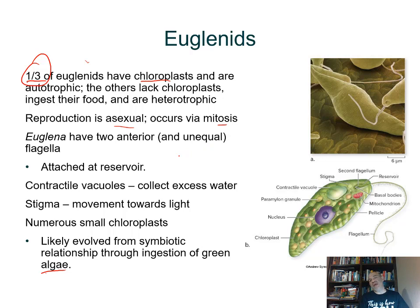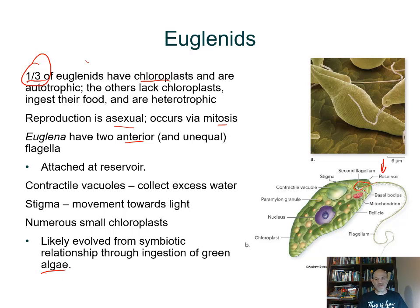About a third of euglenins have the ability to produce their own food with the help of light energy. The reproduction is asexual and occurs by mitosis. The euglena have two anterior flagella that help pull the organism through the water. They arise out of an area at the front referred to as a reservoir.